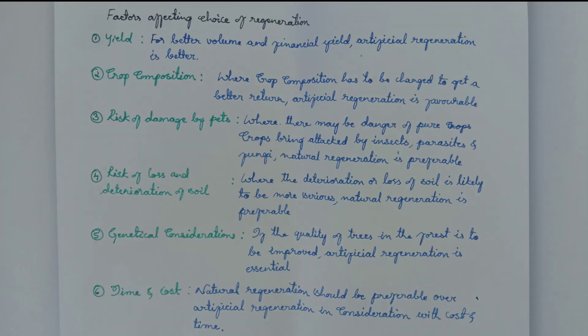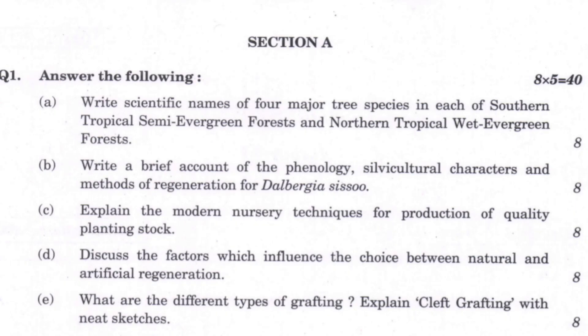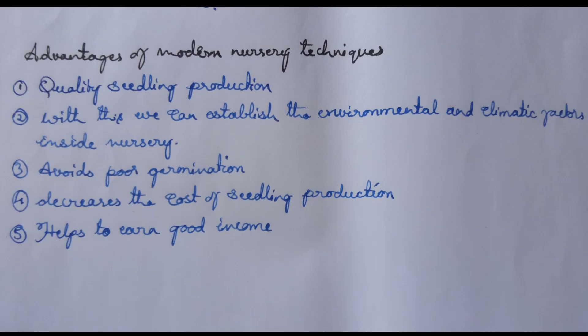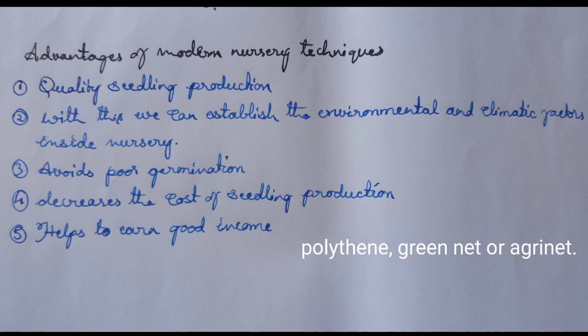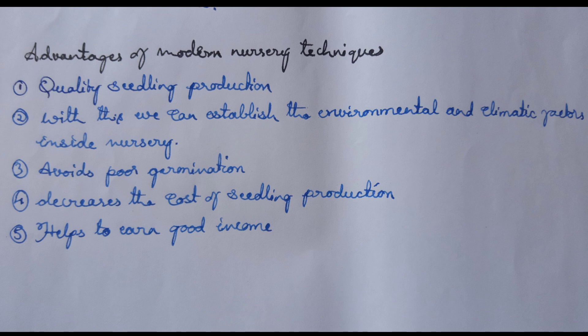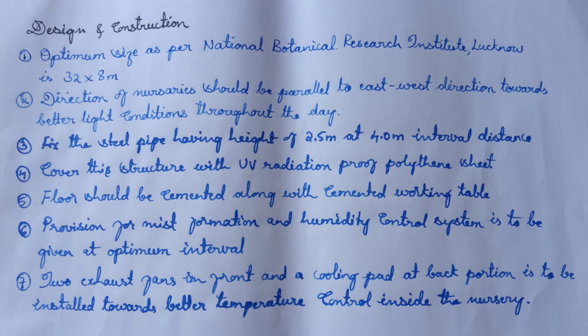The fourth question asks to explain the modern nursery techniques for the production of quality planting stock. Modern nursery techniques can be adopted for quality seedling production. The structure is usually made up of both polygreen net and agri net. Advantages include quality seedling production, the ability to establish controlled environmental and climatic factors inside the nursery, avoiding poor germination, decreasing the cost of seedling production, and helping to earn good income.